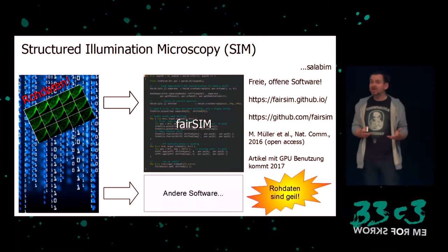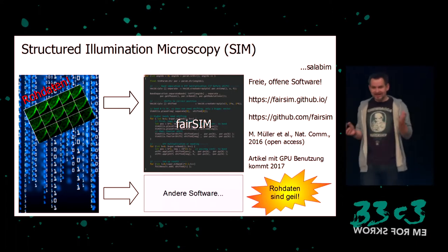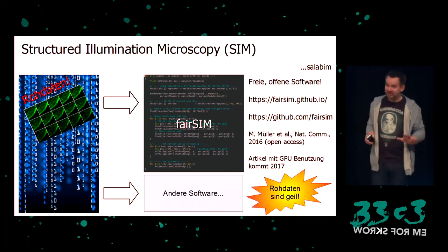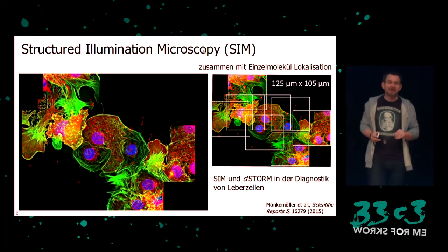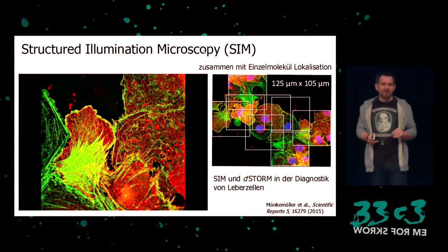The nice thing about this technology is you can use the raw data. Perhaps someone thinks, 'Oh, we could do it even better — maybe this grid isn't a perfect sine wave, and we can use another one, put it into different software, and our picture will get even better.' The raw data is just fantastic. If you take away something from this talk: raw data is great.